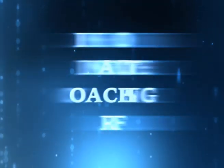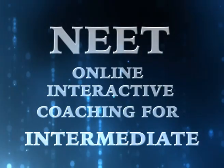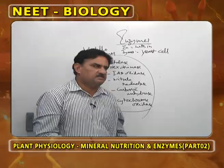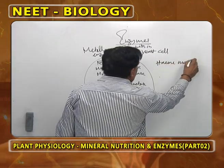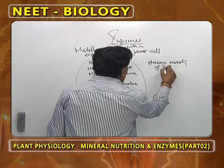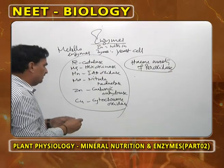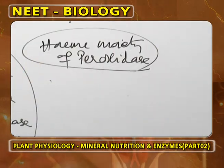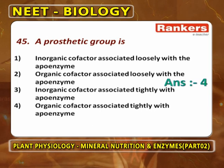Welcome to H2 Apoenzyme. The best example is the heme moiety of peroxidase, which is popularly called a prosthetic group. A prosthetic group is the organic cofactor which is very tightly attached to the apoenzyme.